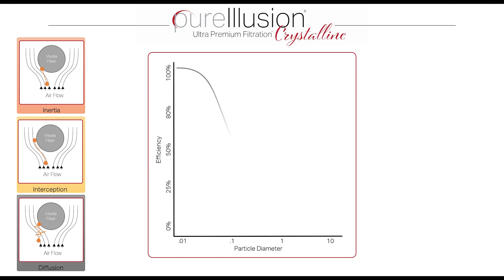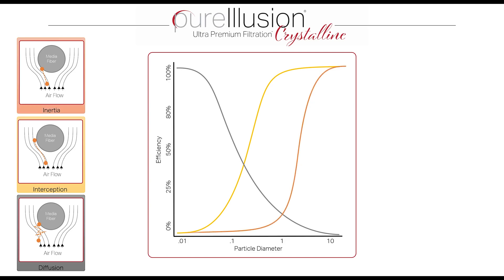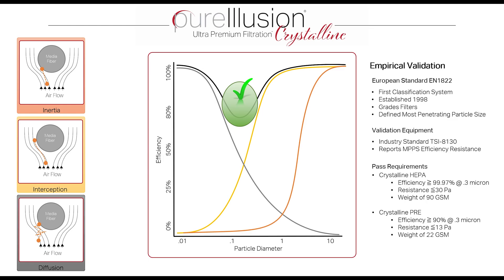We can see that in this graph. A particle of diameter 10 microns is not efficiently filtered by the diffusion principle alone, but looking at the interception or inertial impact principle, a 10 micron particle is certainly filtered out. These three principles intersect at a valley — a Goldilocks zone of 0.3 microns — where we perform our empirical validation based on the European standard EN 1822.